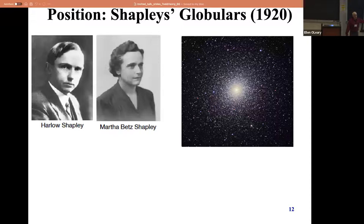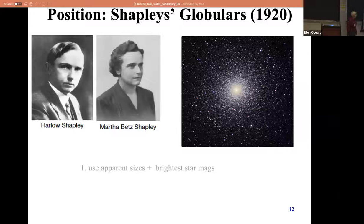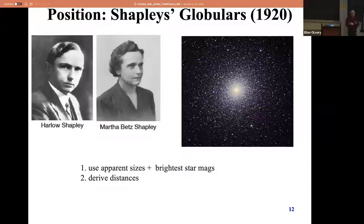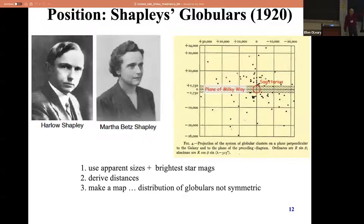Another example - globular clusters, some of my favorite objects. These were studied by the Shapleys. About 100,000 stars, maybe a million for the bigger ones. They just looked at the apparent sizes and locations in the sky, and sometimes the brightest star in those globular clusters, and put that information together to derive a distance - or estimate a distance - using the fundamental attributes of how big it was, assuming they were all basically the same. Then they made a map.